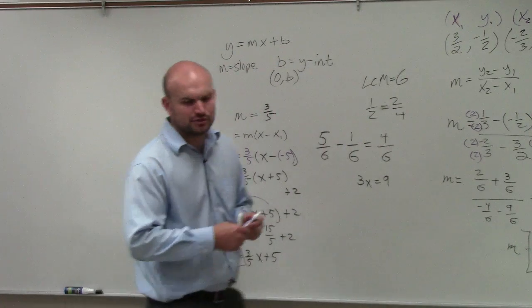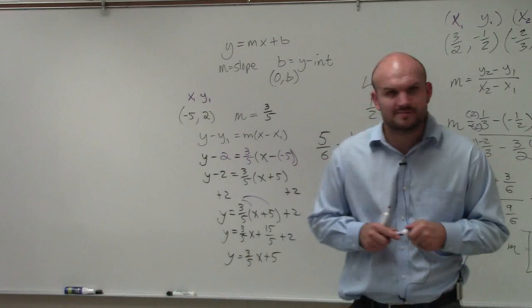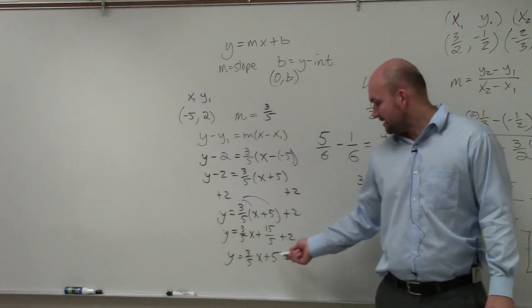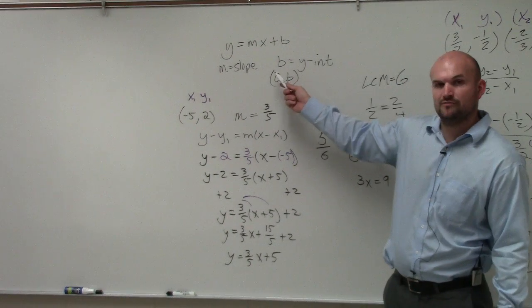I don't think I asked you to find the slope and the y-intercept of the equation of the line. But if you needed to, you could say the slope is 3 fifths and the y-intercept is 5, because that is your value of b.